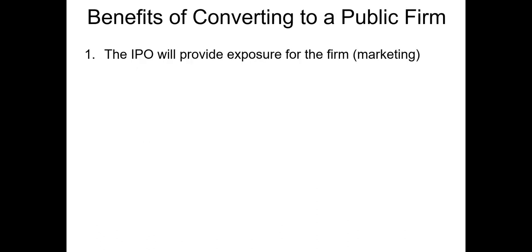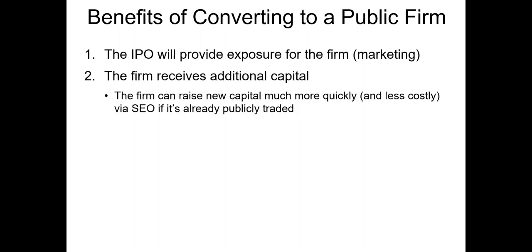There are several benefits of converting from a privately held firm to a publicly traded firm. First, the IPO process will make international news and get people who haven't done business with the firm more interested in the firm's products. For example, when Beyond Meat undertook its IPO, it generated interest that led people to try the firm's burgers. The second benefit is that the firm receives much needed capital. Firms can raise a large amount of capital via an IPO — when Saudi Aramco undertook its IPO, it raised $25.6 billion, the largest IPO in history, illustrating the sheer amount of cash that can be raised by going public.